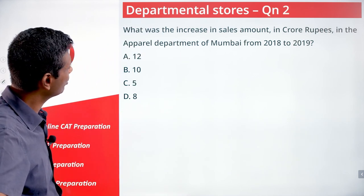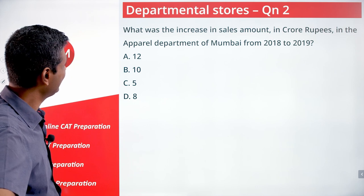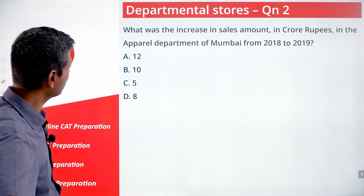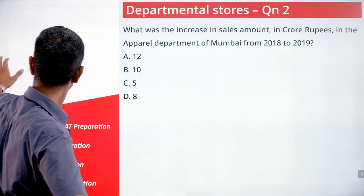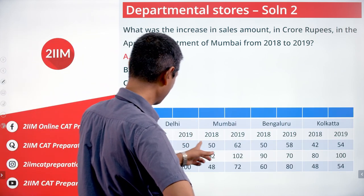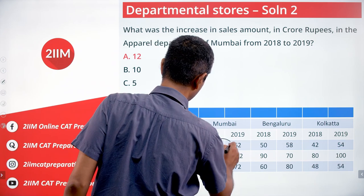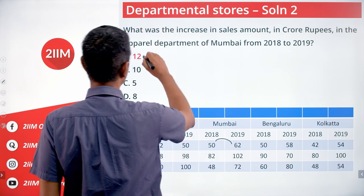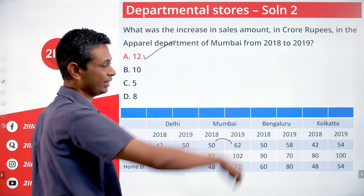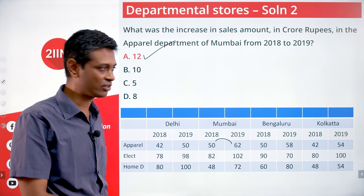What is the increase in sales amount in crore rupees in the apparel department of Mumbai from 2018 to 2019? That's 50 to 62 — a 12 crore increase. Once you get the grid, it's just marking down the answers.